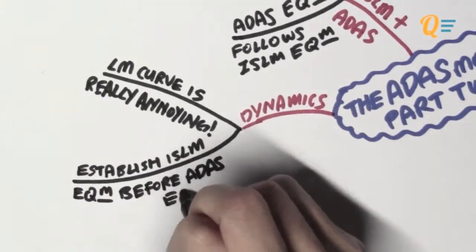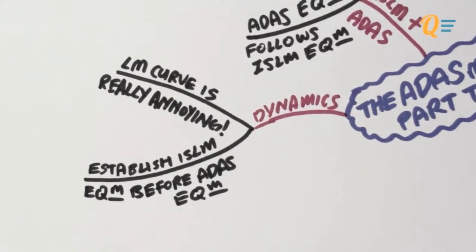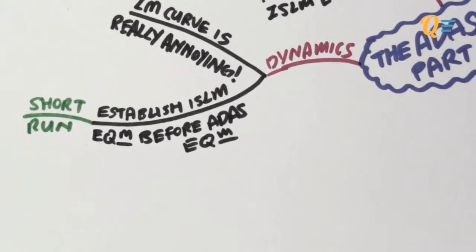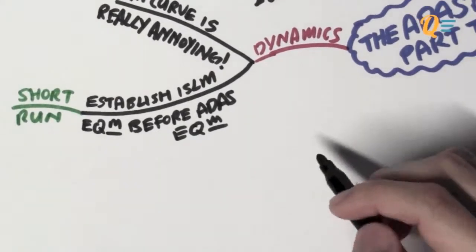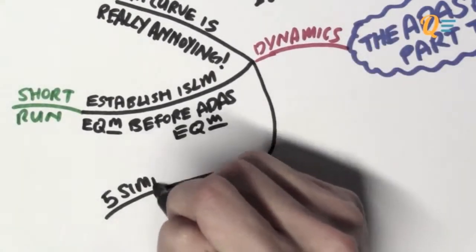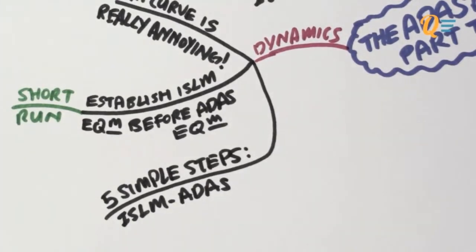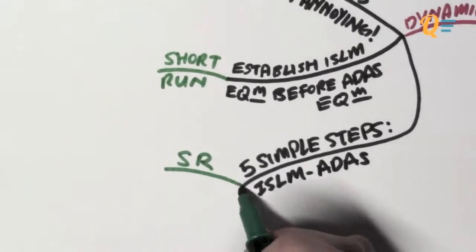Now, the second thing you're going to take note of is you should establish your ISLM equilibrium before establishing the ADES equilibrium in the short run. The reason behind this is to avoid the really annoying LM curve. So with these two points in mind, here are five simple steps when you're talking about the dynamics of the ISLM model and the ADES model.